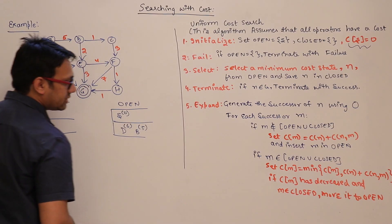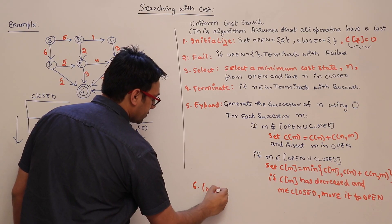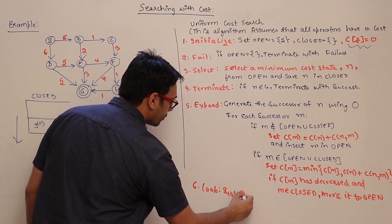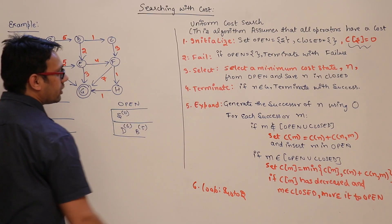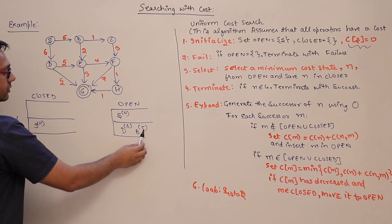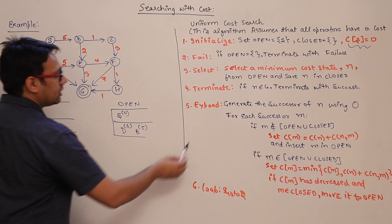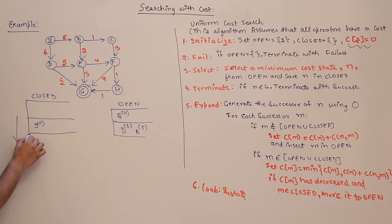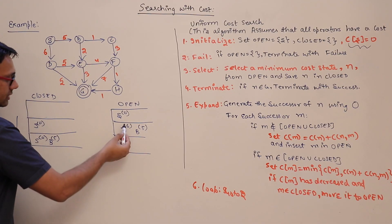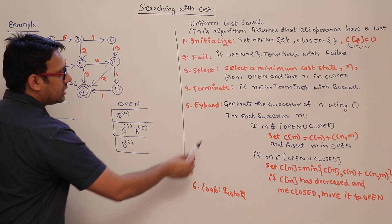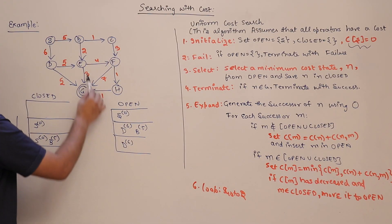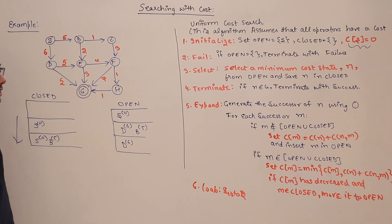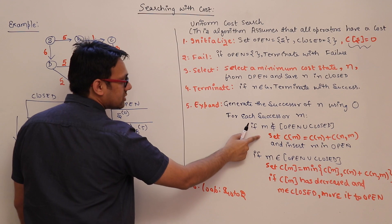We go back to step 2. Open is not empty, so we execute step 3 again: select the minimum cost state from open. The minimum cost state is B with cost 5. We save B in closed, so closed now contains S(0) and B(5). Open contains D(6). B is not a goal state, so we generate successors of B, which are E and C. Both are not in open or closed.